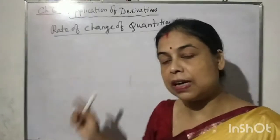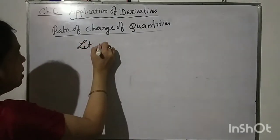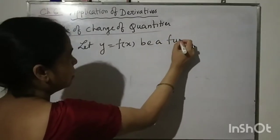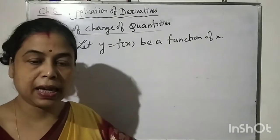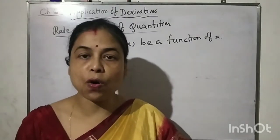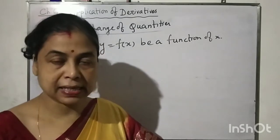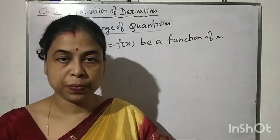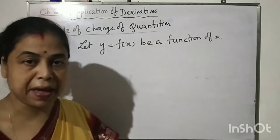To start this topic, let us consider a function. Say, y is equal to f(x), a function of x. Now if you give a small increment in x, say delta x, then the corresponding change in y will be delta y. Here x is the independent variable and y is the dependent variable.